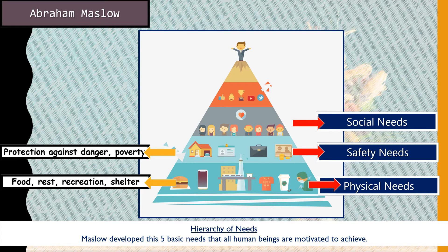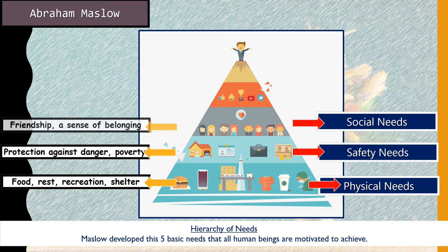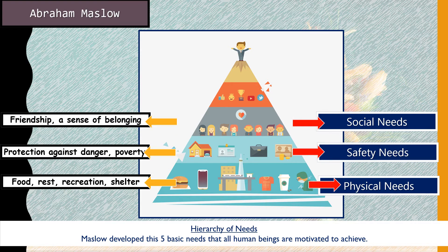After safety needs are achieved, the next level is social needs. People want to have friends, feel a sense of belonging, and have people they can confide in and call friends. That is what social needs represent.